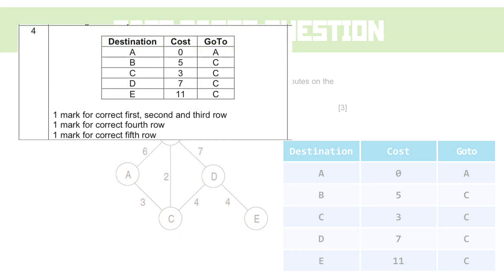Let's look at the mark scheme for that. So, we're getting a mark for the correct first, second, and third row, because they're all direct contacts. A mark for the fourth row, because a bit more thinking involved there. And a mark for the fifth row on its own, because that's a bit more eclectic. And the go-to one, in other words, where do we go to first to get here, is a weird thing to think about.